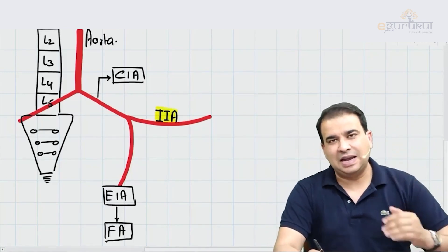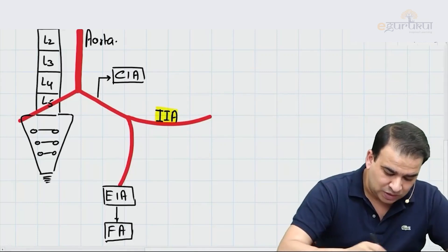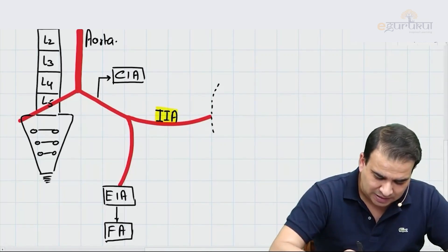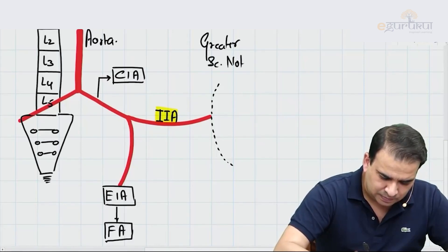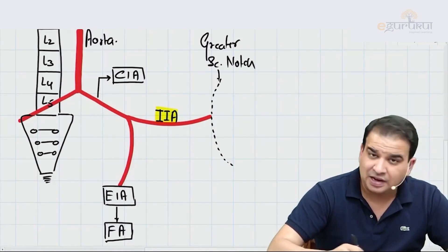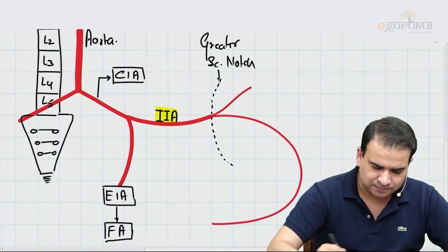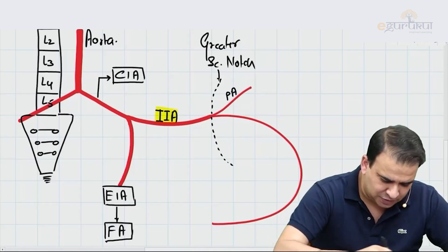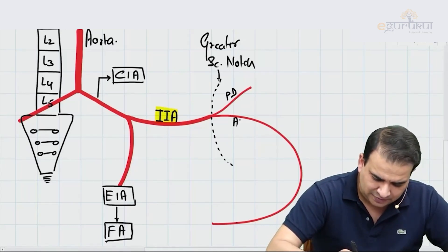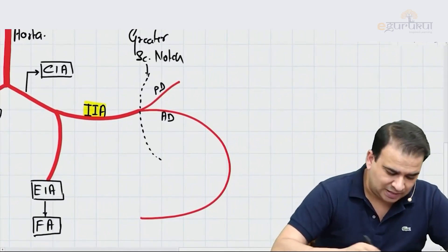Once the internal iliac artery reaches the level of the greater sciatic notch — and note, it is not coming out of the greater sciatic notch — at that level it divides into a smaller posterior division (PD) and a larger anterior division (AD).